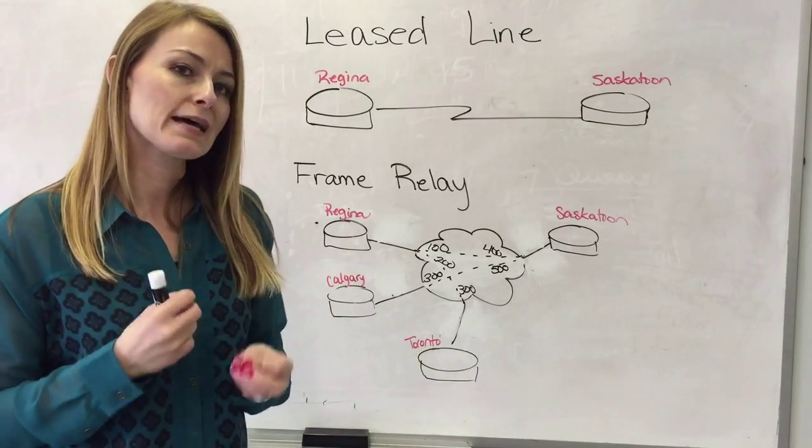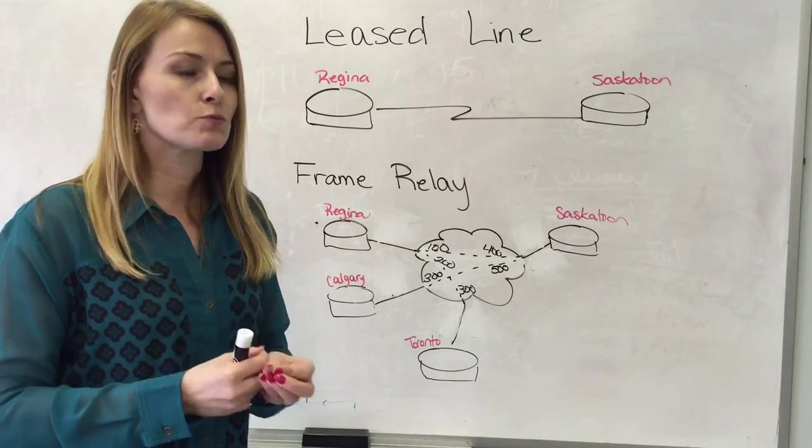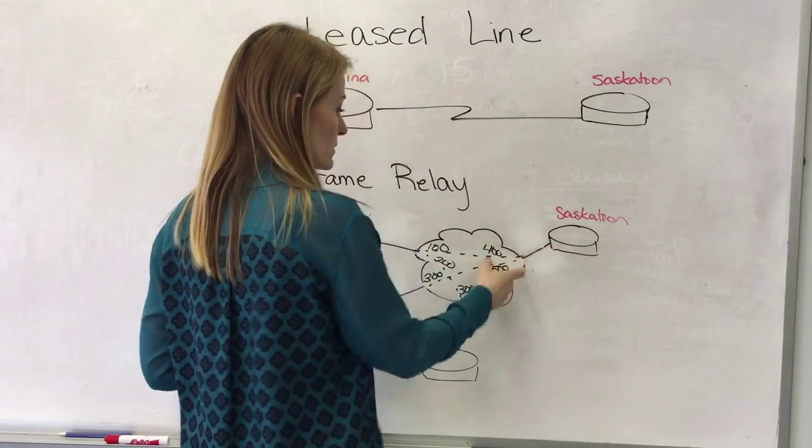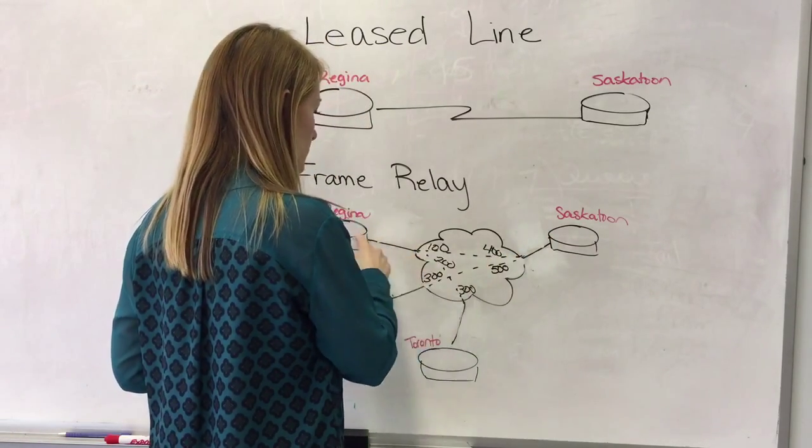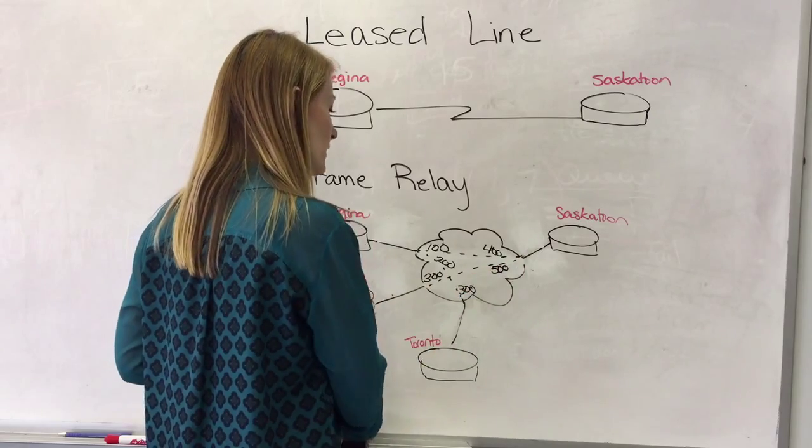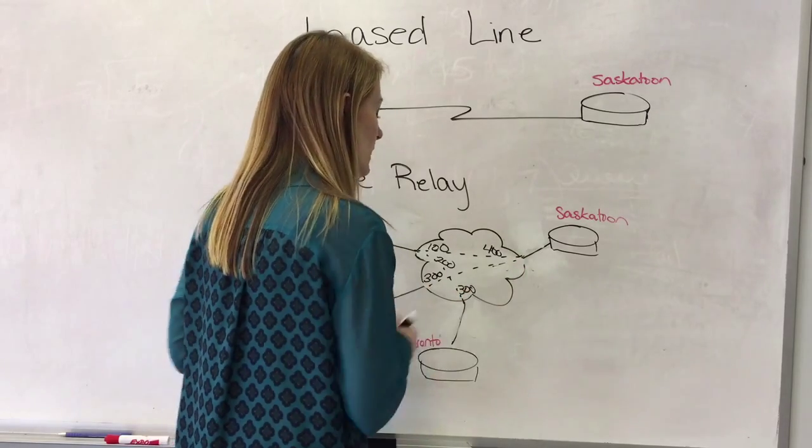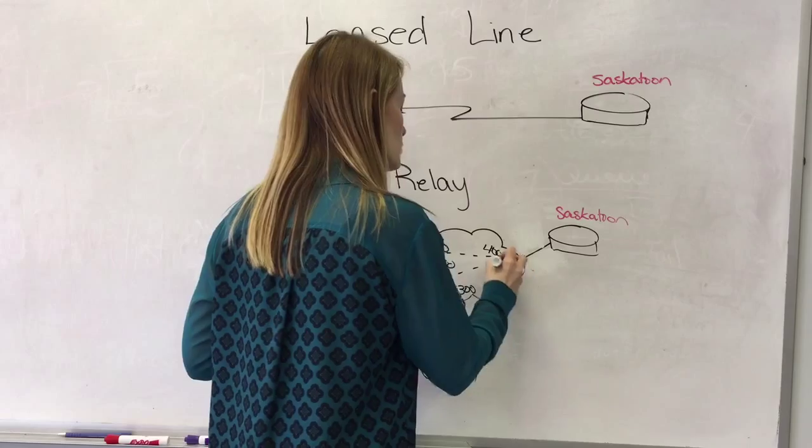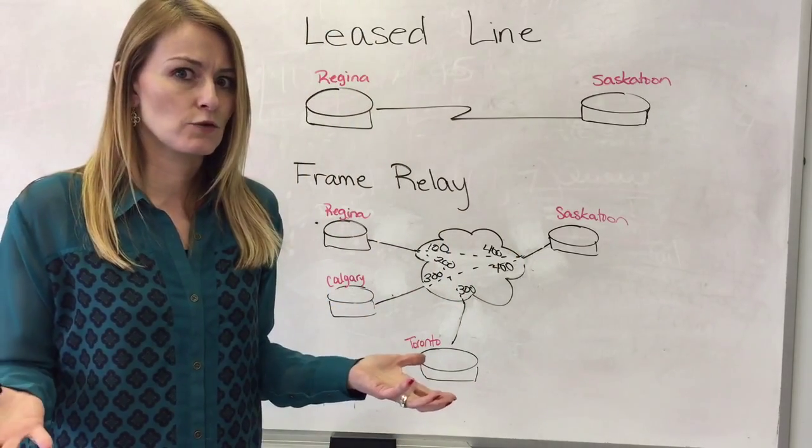Now the only place where you can't have duplicate DLCIs is say here from Saskatoon we have a pathway to Regina and also a pathway to Calgary. Well we can't very well have each of those labeled as the same DLCI because then it's confusing.